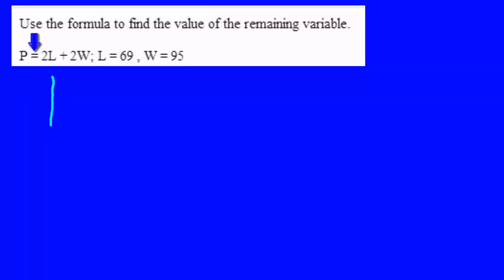The first one we're going to use is P equals 2L plus 2W and that's for the perimeter of a rectangle. A rectangle is like an elongated square.